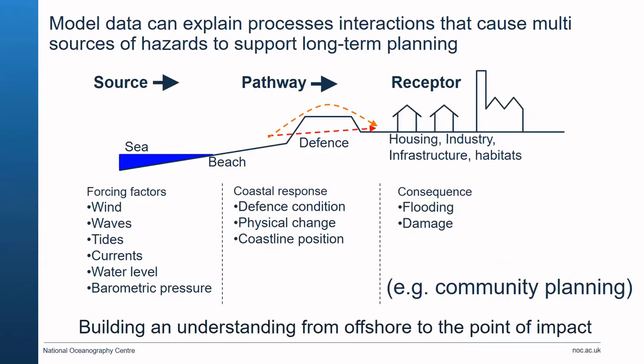Very often models are used to explain multi-hazard conditions and the processes that interact with each other. This example is linked to flood hazards — models can be used to understand the source processes that create the hazard and how they interact, the pathways of these hazards such as how water propagates through or over a defence, and the consequences, for example an inundation model that simulates how a community or industry is impacted by the water causing inundation.